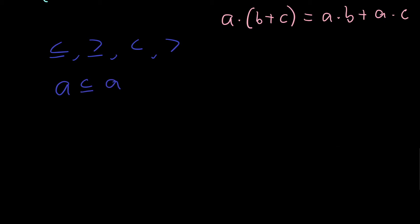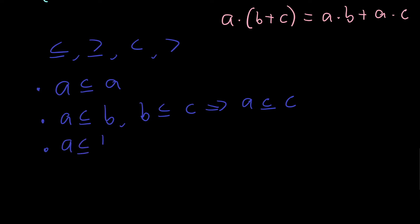We have: if a is less than or equal to b, and b is less than or equal to c, that means that a is less than or equal to c — again, a property that we would expect to see. We also have the further property that if a is less than or equal to b and b is less than or equal to a, then a equals b. These are properties we're familiar with from rational numbers and even the natural numbers — we impose them as an order.